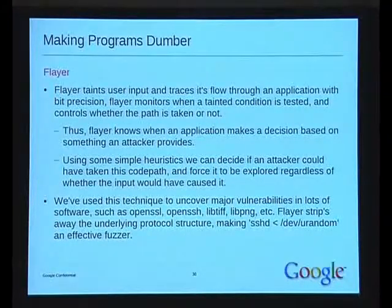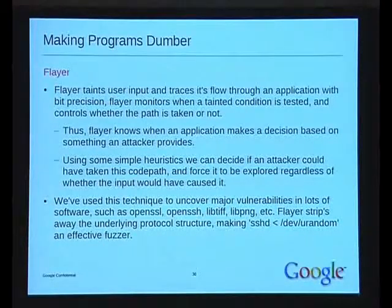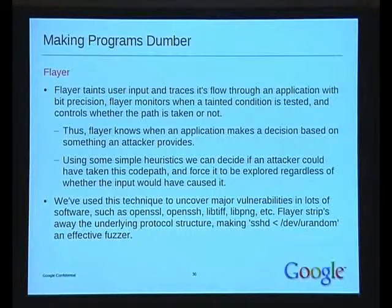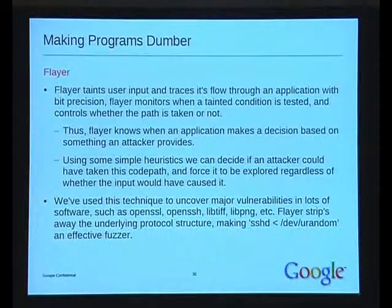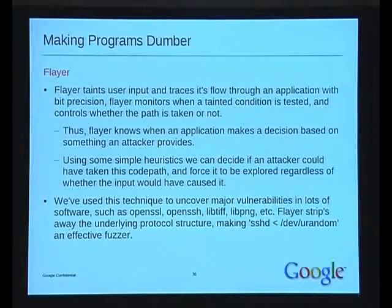We've found major vulnerabilities using this technique in things like OpenSSL, OpenSSH, LibTIFF, LibPNG, and lots of others. Flayer basically strips away the protocol, making dev/urandom an effective fuzzer. We've been combining these techniques together to get some excellent results, and we think DBI fuzzing in general is a really exciting research area with lots of cool stuff going on at the moment.